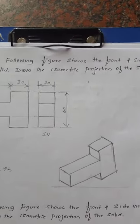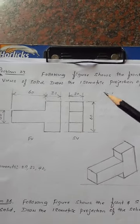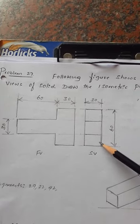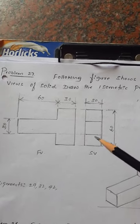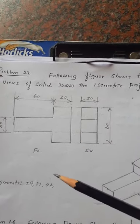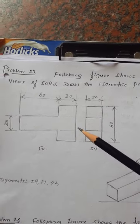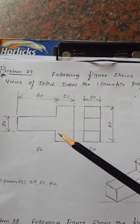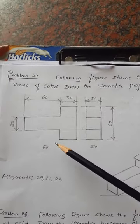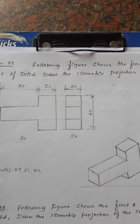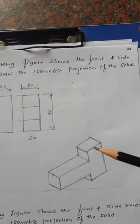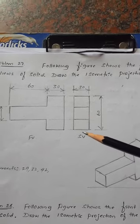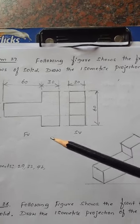Now to draw the isometric projection, by viewing these two orthographic projections — front view and side view — in the previous problems we drew the top view and front view, but here in this problem, directly the front view and side view are given. Now from the front view and side view, using your imagination, you can visualize how this object looks.